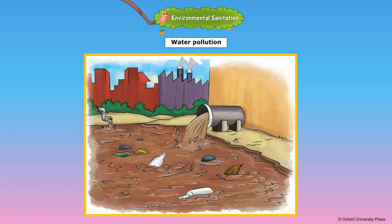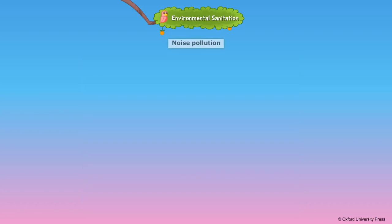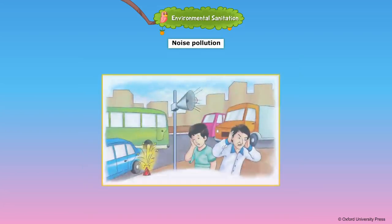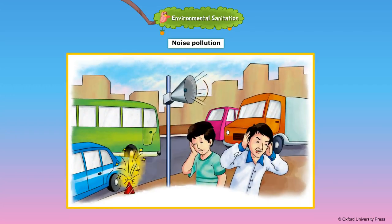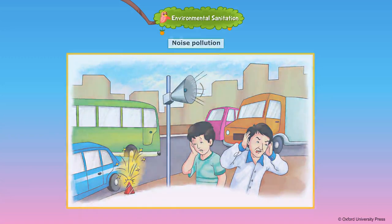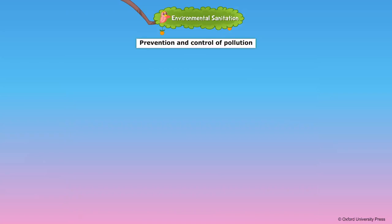Polluted water becomes unfit for drinking. Loudspeakers blaring also cause noise pollution, and we must avoid producing unnecessary noise. We can prevent and control pollution to save our beautiful planet Earth by following some rules.